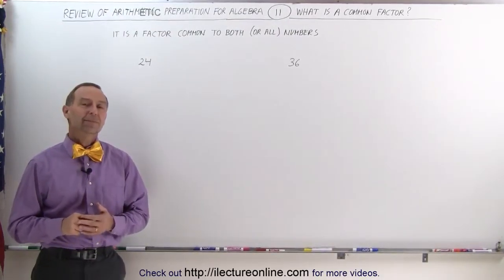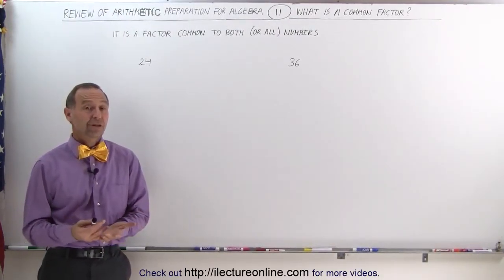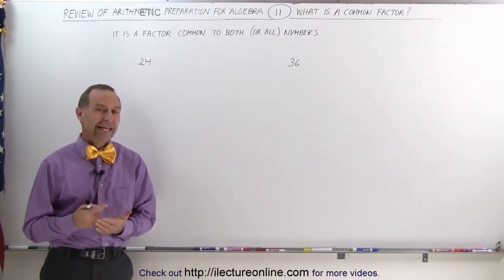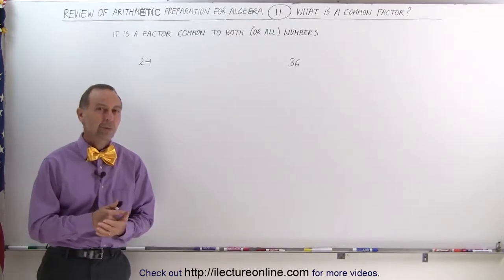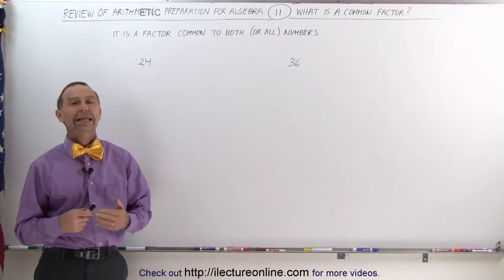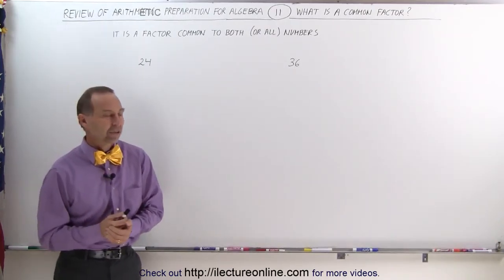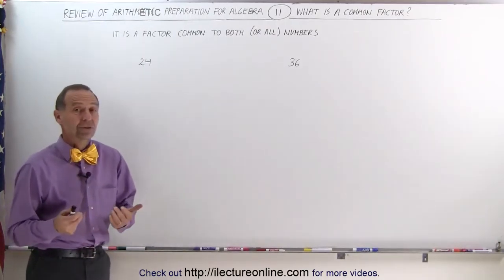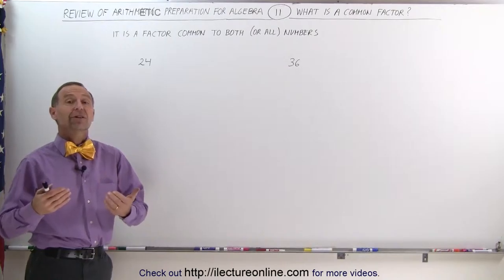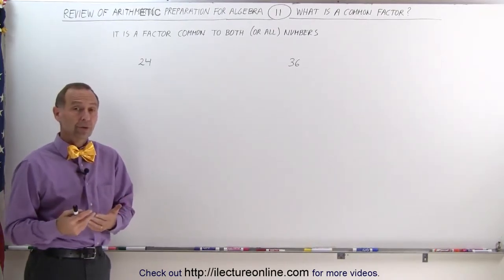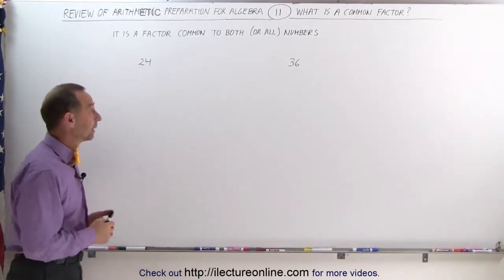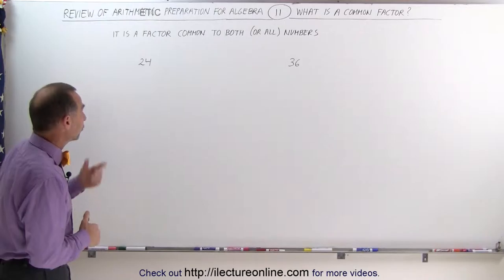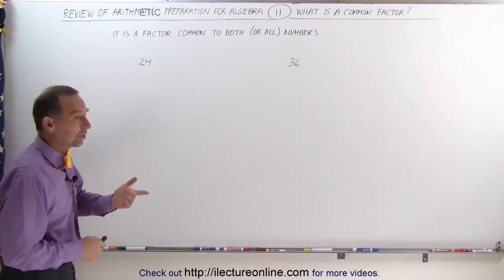Welcome to ElectroOnline. In the previous video, we learned what a factor is. In this video, we're going to learn what a common factor is. A common factor is a factor that's common to two or more numbers. Here are the two numbers we're going to consider: 24 and 36.